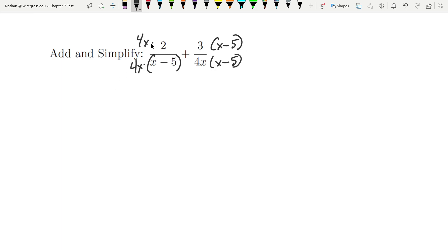So I get 4x times 2 is 8x over 4x times x minus 5. Plus 3, I'm going to go ahead and distribute this into there. I get 3x minus 15 over 4x times x minus 5.